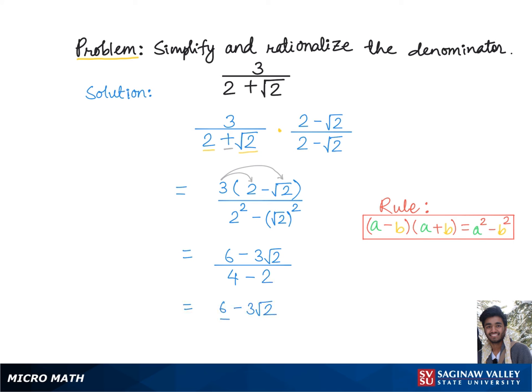Which is the final answer. Or we can factor out 3 from the numerator to get 3 times (2 - √2) over 2, which is the final answer as well.